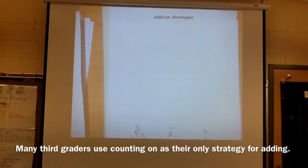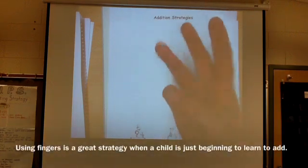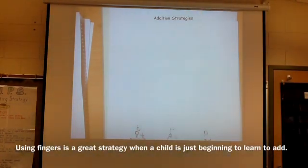Most of them come in knowing how to add, but what we notice is a lot of them come in knowing how to add by using the strategy counting on. For instance, if you see a kid with 4 plus 7, they may go 7, 8, 9, 10, 11, which I tell the kids right away, hey, you know, that's fine for right now, but when you're in ninth grade, you don't want to be using your fingers.